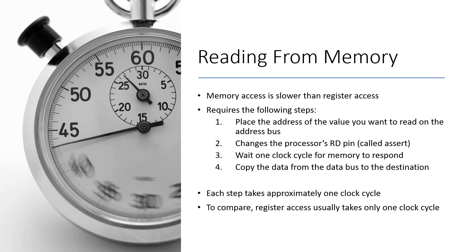Comparing that to register access: when getting data from registers, we don't need to work with the address bus or set any pins. It's direct access, which takes only one clock cycle on average. Reading from RAM is about four times slower than reading from registers, which gives context for why we care about registers and why RAM may not be as fast as we'd hope.